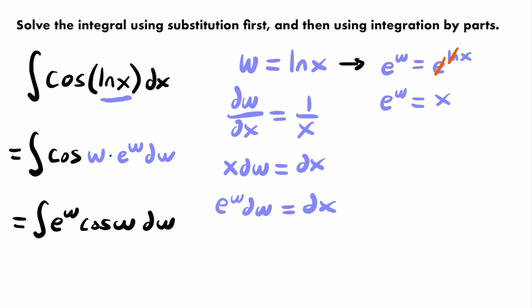Integration by parts is a technique for integrals featuring a product of two different types of functions — algebraic, trig, logarithmic, or exponential. Here we have a product of an exponential and a trigonometric function. You might even recognize this as an integral where we'll need to use integration by parts twice. The formula is: the integral of u dv equals u times v minus the integral of v du.